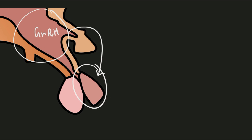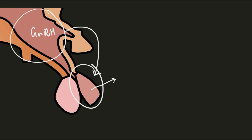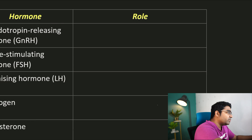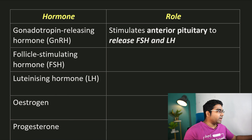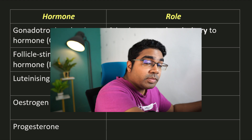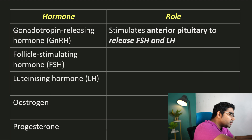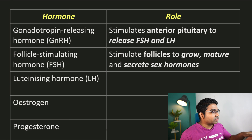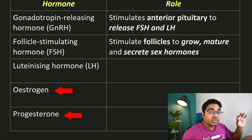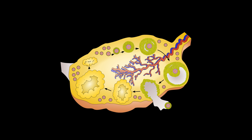The two gonadotropins are FSH, follicle stimulating hormone, as well as LH, luteinizing hormone. Follicle stimulating hormone, released by the anterior pituitary gland, stimulates the follicles — causing them to grow, mature, and secrete the sex hormones estrogen and progesterone, which are secreted by the ovaries.